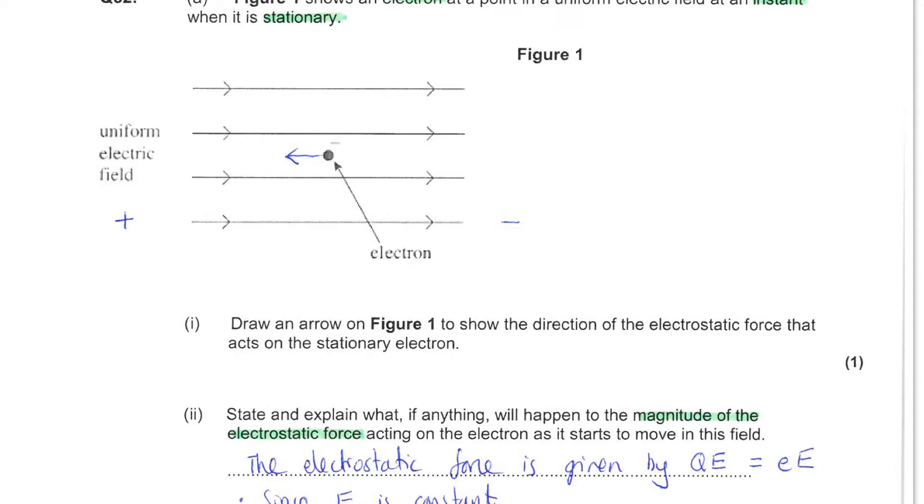Next, you are shown an electron at a point in a uniform electric field at an instant when it is stationary. Think about the field lines acting in this direction. Think about the electron and its negative charge. You are asked to draw an arrow to show the direction of the electrostatic force acting on the electron. Electric field lines always point from positive to negative. Looking at the electron, we realize that it would experience a force to the left, acting towards the positive side of the field.